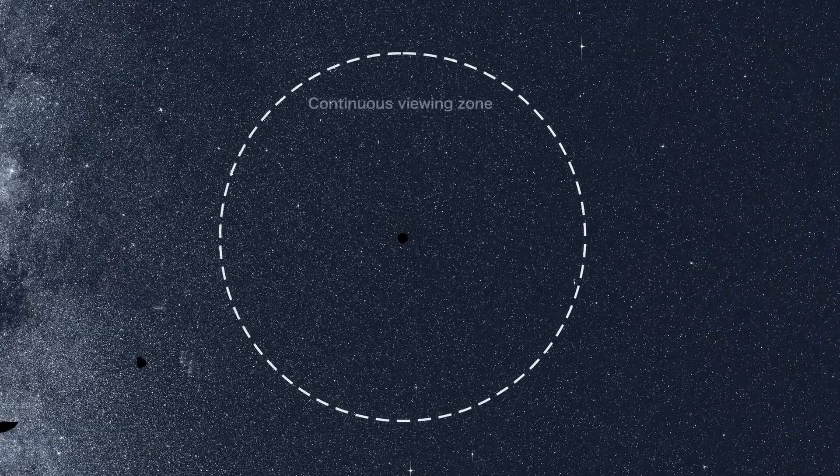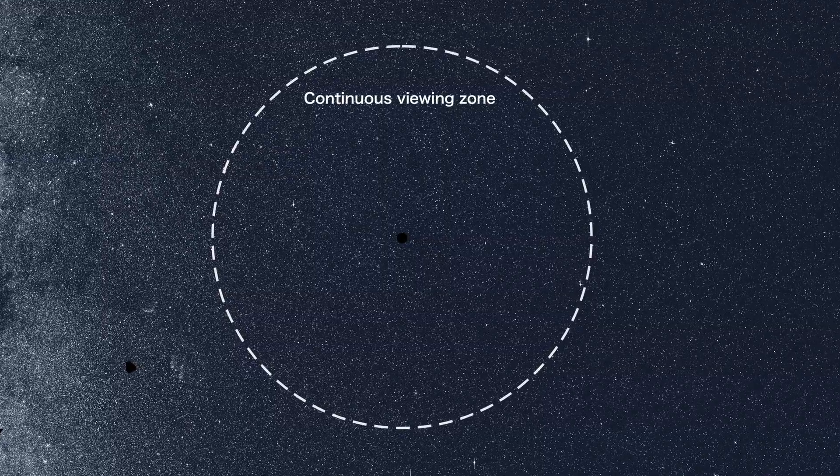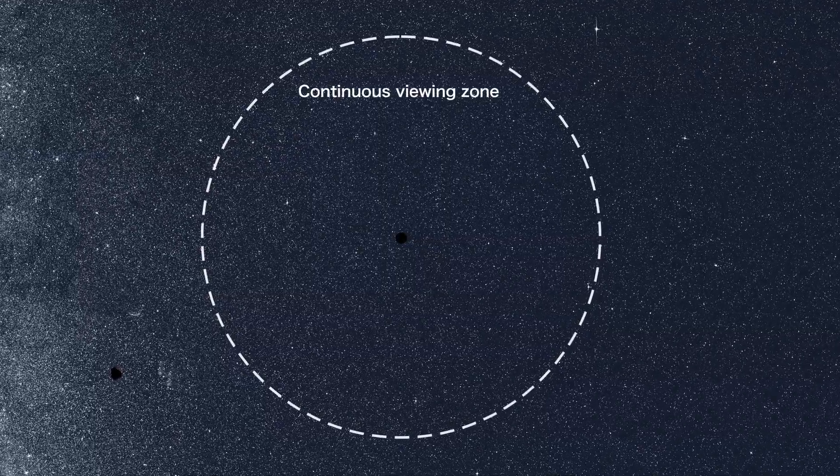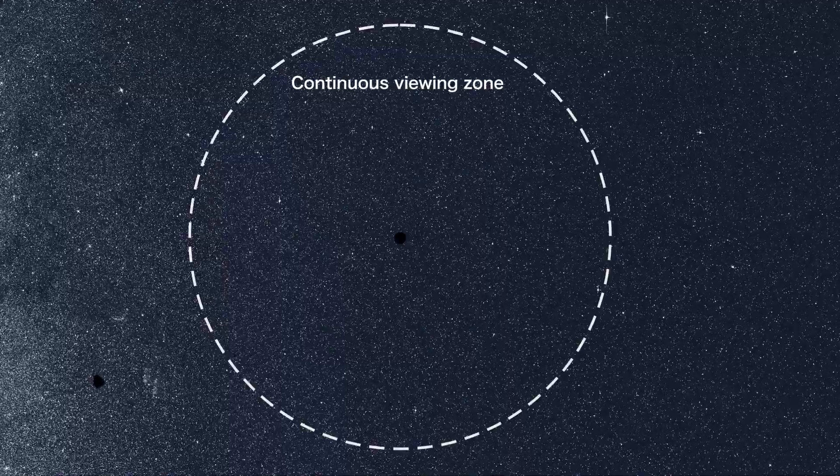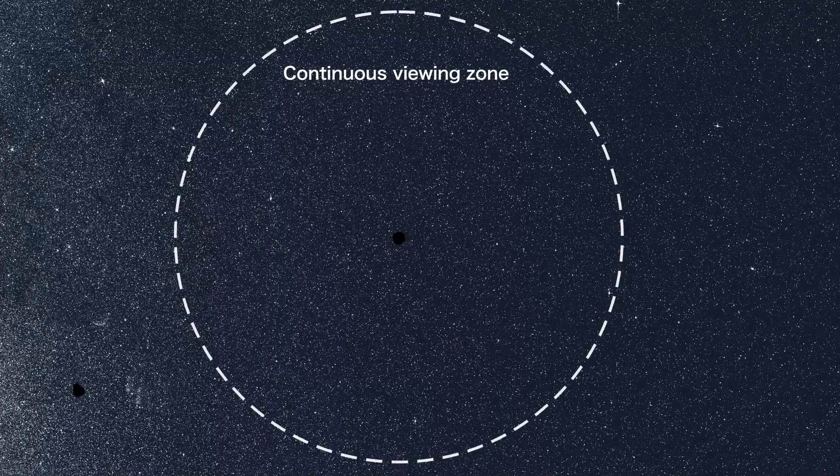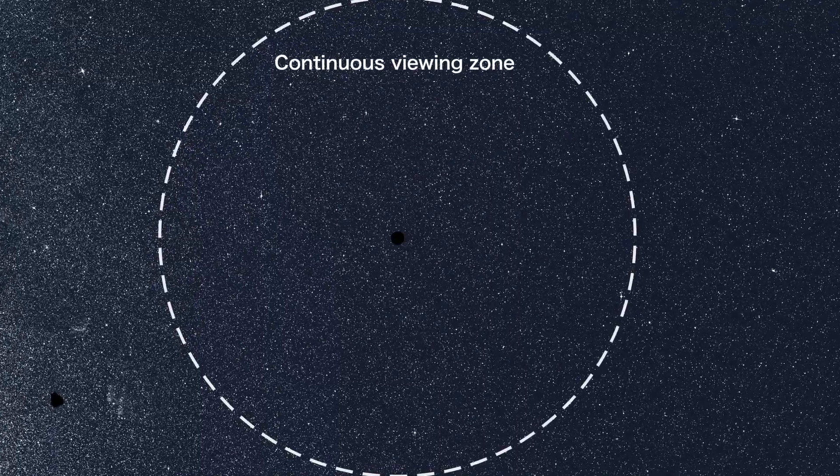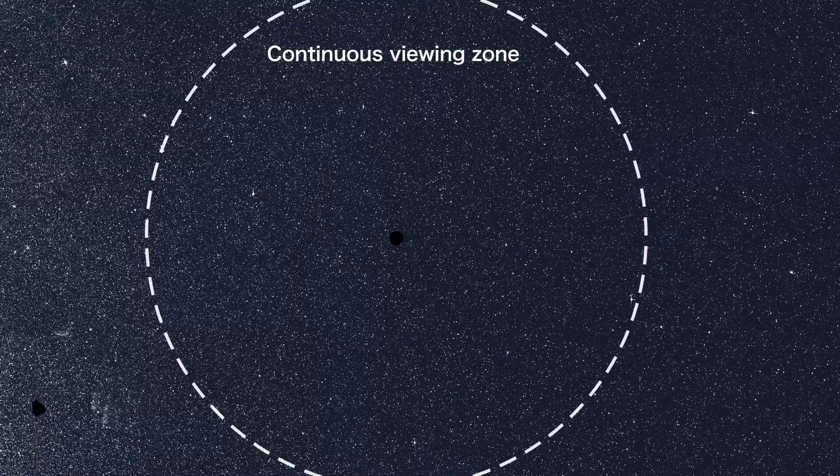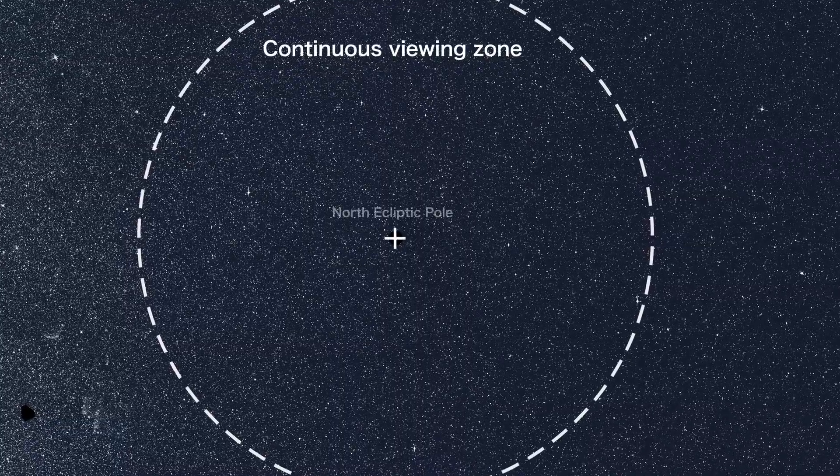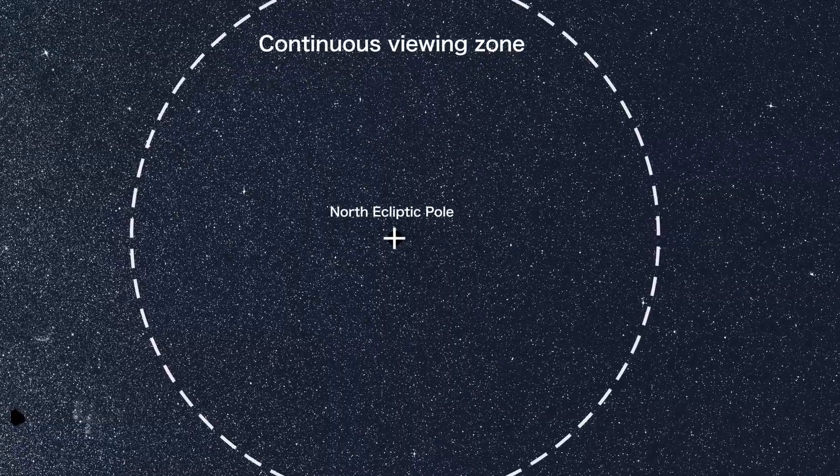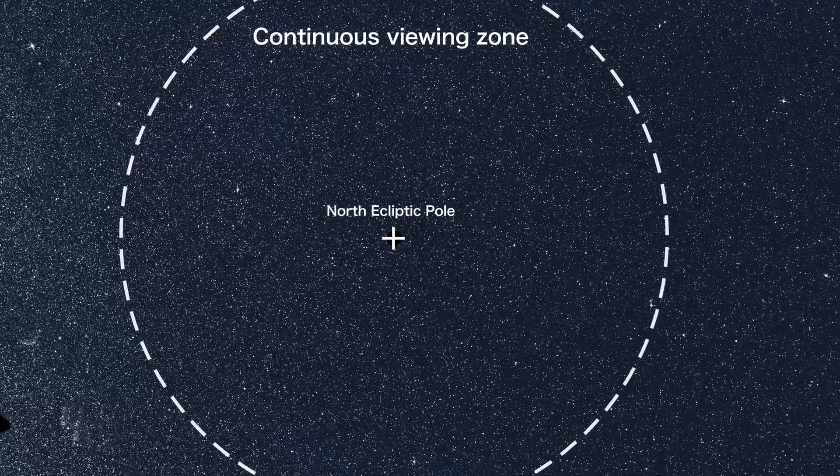At the center is the continuous viewing zone. Here, the view of one TESS camera overlaps across all 13 sectors, which means TESS monitored the region for nearly an entire year. At its center is the north ecliptic pole. This is where the imaginary axis of Earth's orbit around the Sun meets the sky.